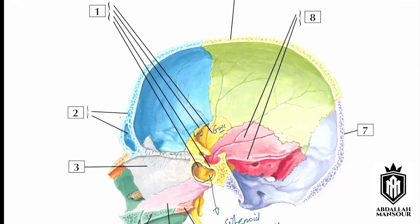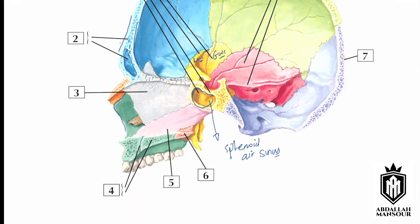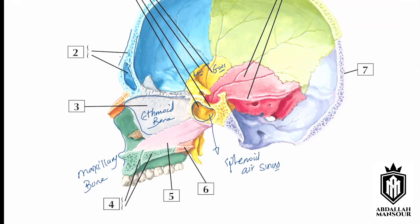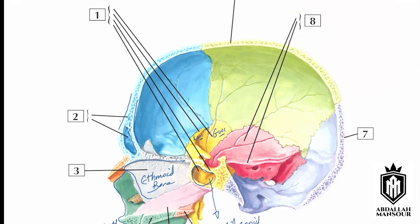The frontal bone is present and has a frontal air sinus in the center. Number three is the ethmoid bone, number five is called the vomer, number six is the palatine bone, and number seven is the occipital bone.